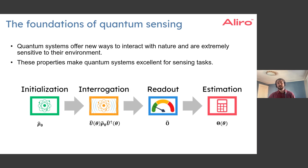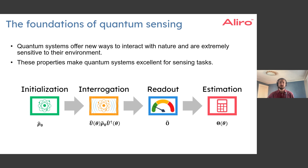At its most basic level, quantum sensing uses quantum systems to interact with nature and learn some property about its environment. The fact that quantum systems are so small and sensitive to their environment makes them excellent for sensing environmental signals with very high precision.